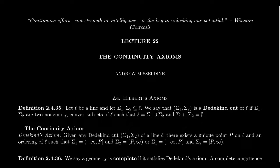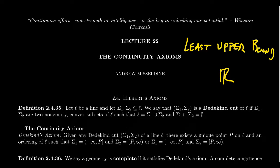The completeness axiom is what makes the real numbers the real numbers, as opposed to some other number system. In real analysis, the completeness axiom is often referred to as the least upper bound property. The least upper bound property is what sets apart the real numbers compared to some other ordered field like the rationals. The least upper bound property says that all non-empty sets of numbers with an upper bound must have a least upper bound, called the supremum of the set.